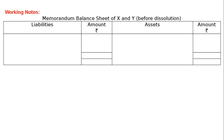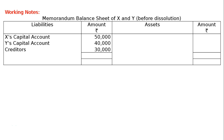This is the memorandum balance sheet of X and Y before dissolution. Draw the format of a balance sheet. We are given X's capital account rupees 50,000, Y's capital account rupees 40,000, and creditors rupees 30,000 — totaling rupees 1,20,000. On the asset side, sundry assets as a balancing figure is rupees 1,20,000.